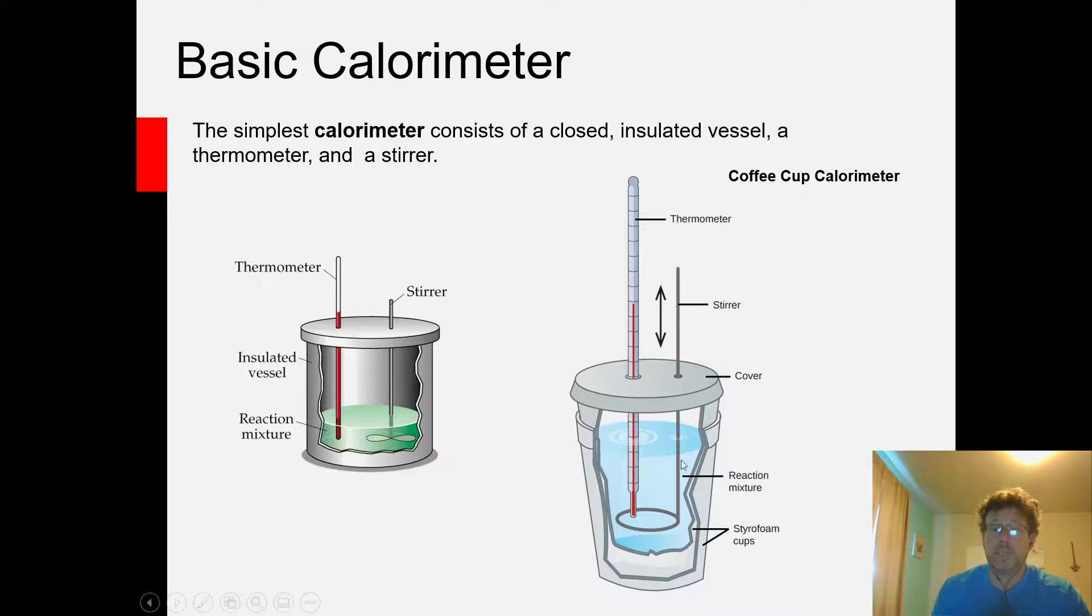What you're really doing with a calorimeter is you're making a small space which we're going to call the surroundings that's insulated for a short amount of time from the rest of the universe, and any heat that's gained or released by a chemical reaction happening inside the calorimeter comes only from the space that's inside the calorimeter, whether that's water or air.